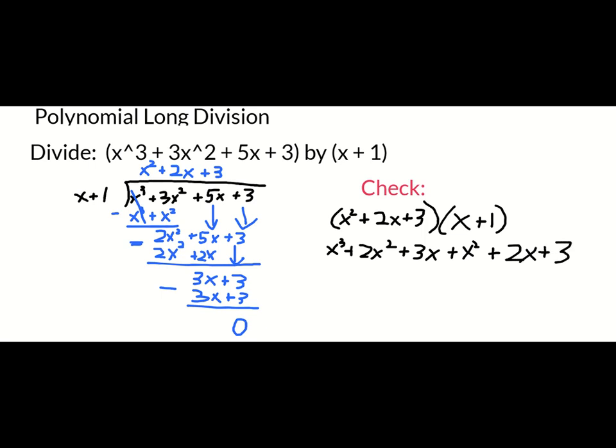And finally, if I combine all my like terms, I'm going to get a total of 3x squared. So I get x cubed plus 3x squared plus the 3x and the 2x together make 5x.